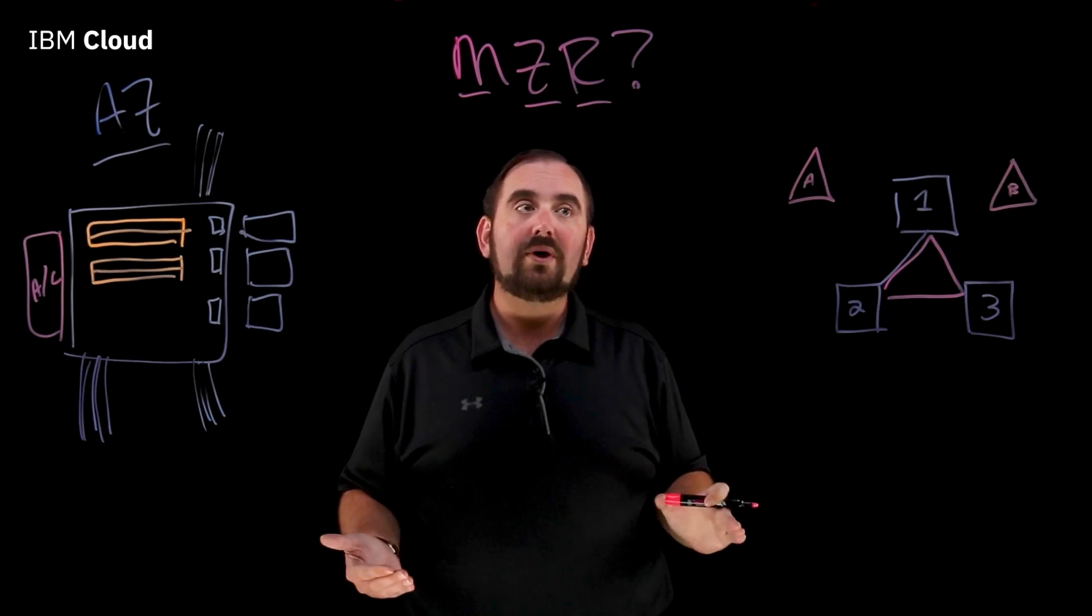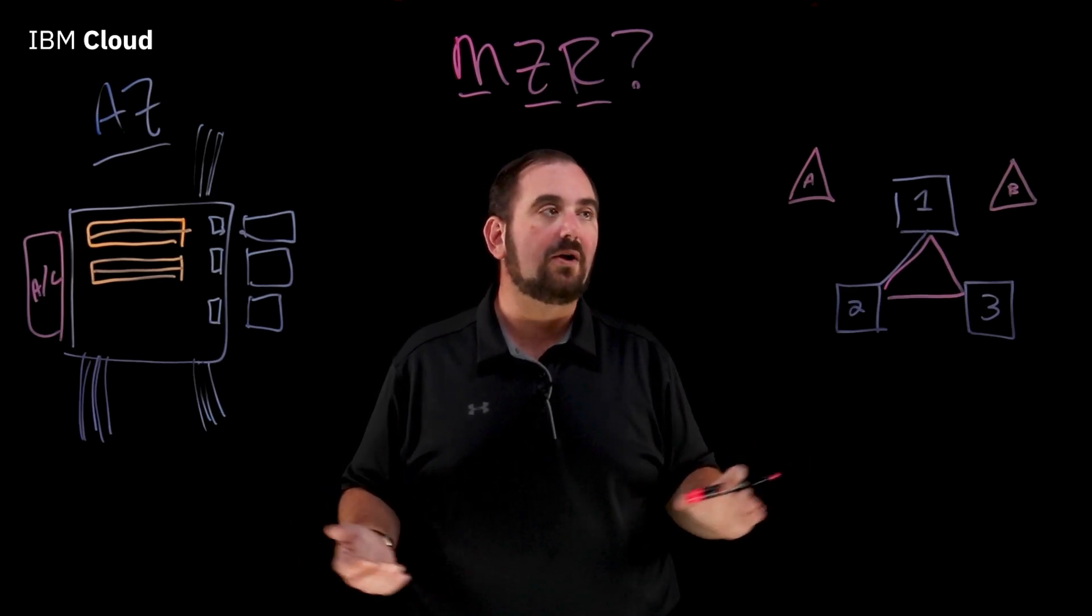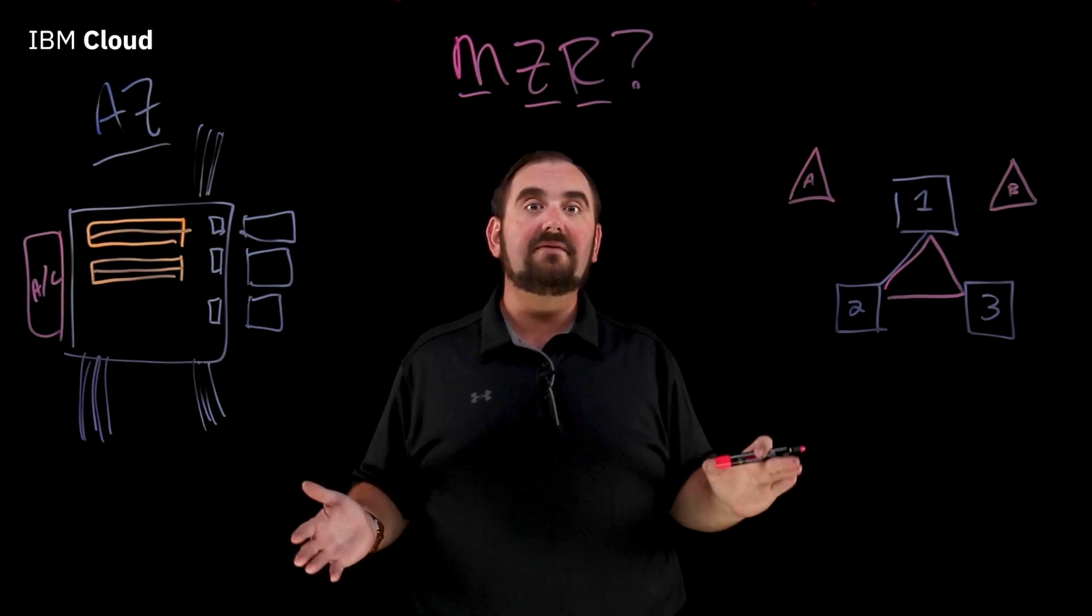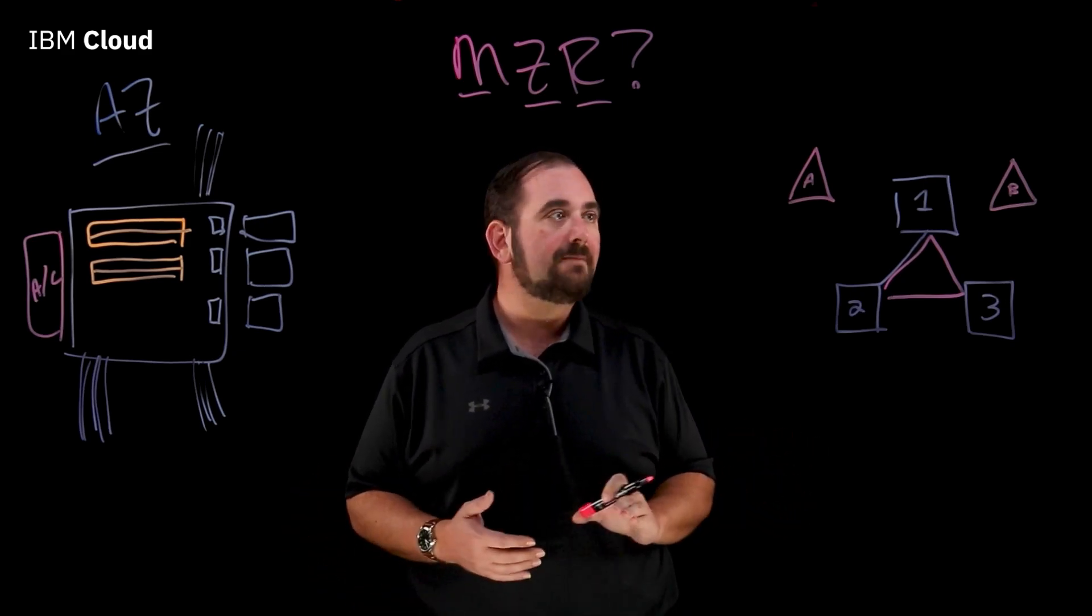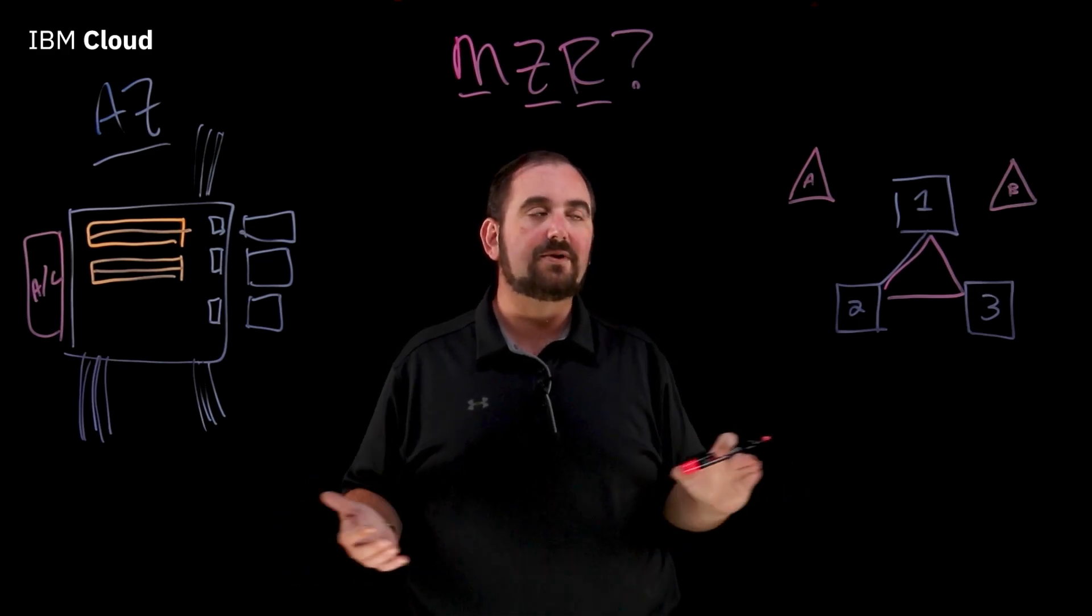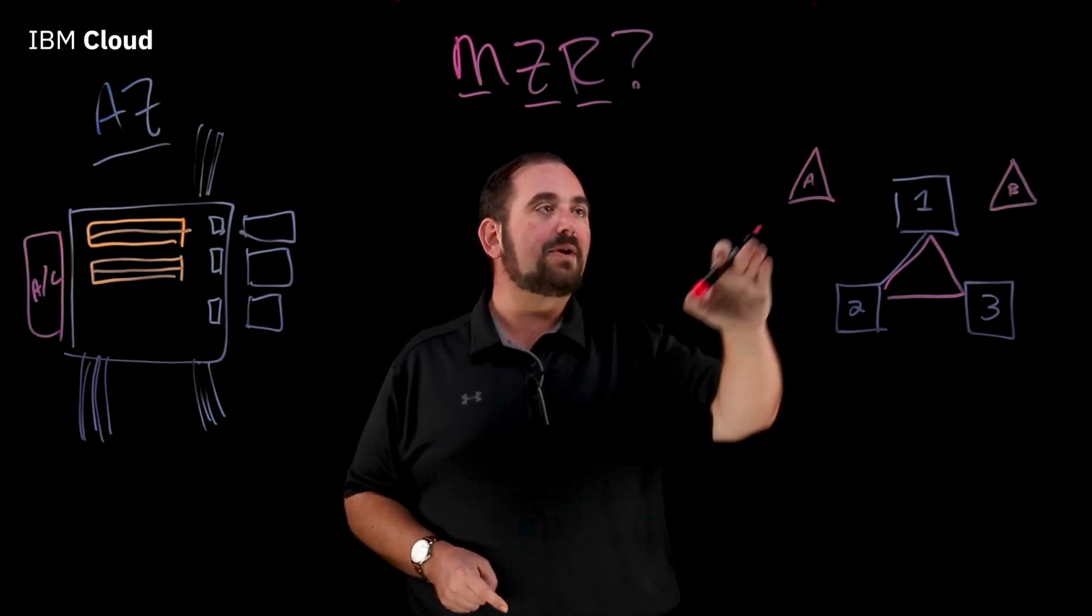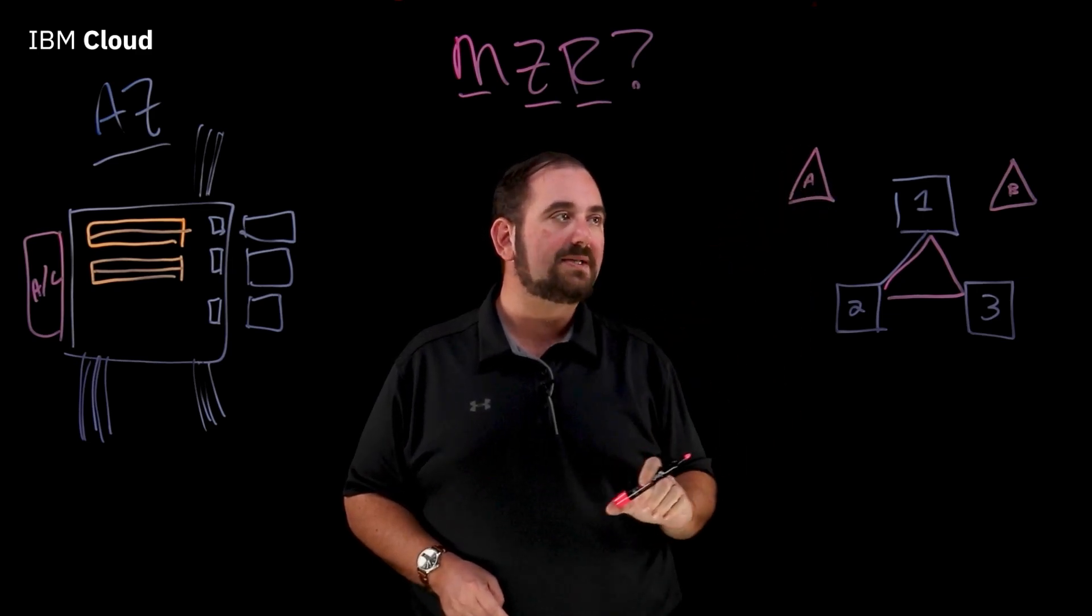A network point of presence or network pop or a network hotel is a place where a lot of fiber comes together. Fiber from companies that lease it individually, fiber from the telcos, fibers from the provider, but the fiber comes in here. These are the main connection points.